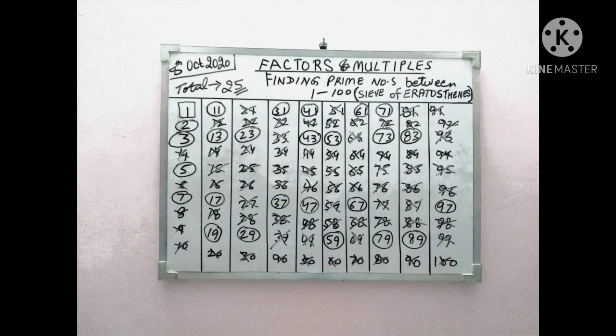Now see this table on the board. We have written numbers 1 to 100. Now we are trying to find the prime and composite numbers from 1 to 100. A very simple method was found by Greek mathematician Eratosthenes. The process is simple. We know that 1 is neither prime nor composite. So we just try to make a square box around it.